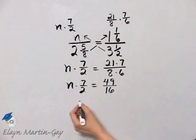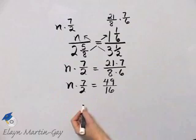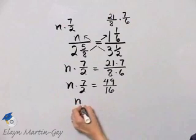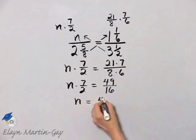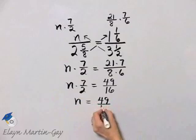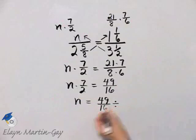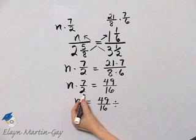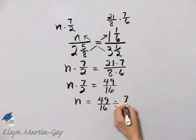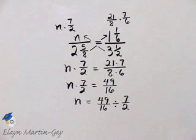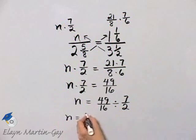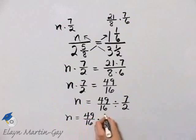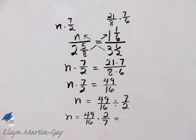Now I have that n times 7/2 is equal to 49 divided by 16, so n itself is equal to 49/16 divided by whatever this number that's multiplied by n is, which in this case is 7/2, so divided by 7/2. And so we have that n is equal to 49/16 times 2/7, and I'll let you simplify and multiply.